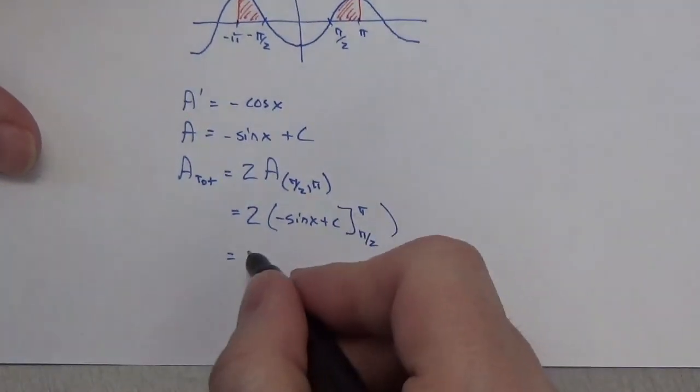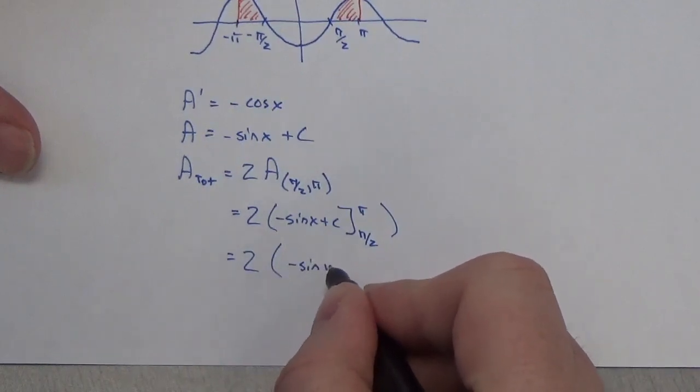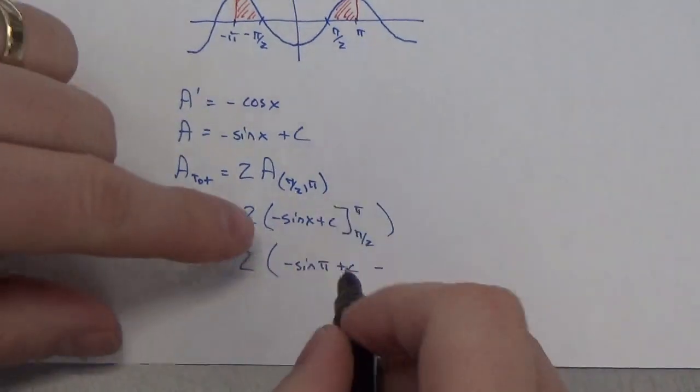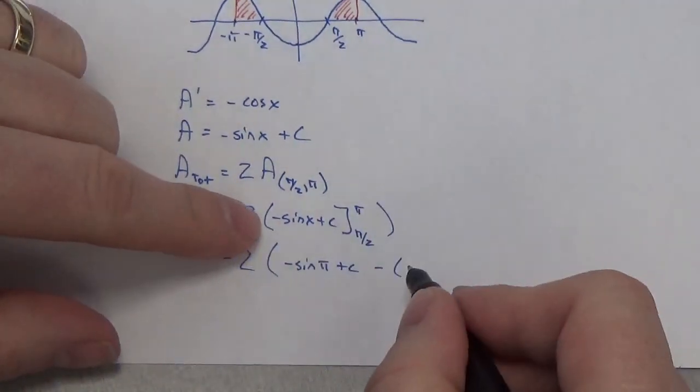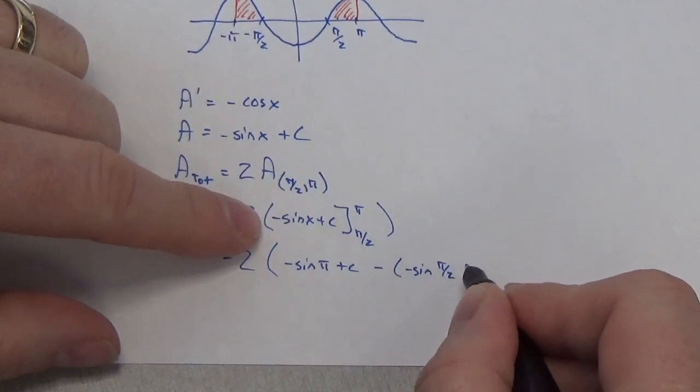And we know that's going to look like this. That's going to be two times negative sine of pi plus c minus, and then I have to distribute that through. So, it's going to be the second value here, negative sine of pi over 2 plus c.